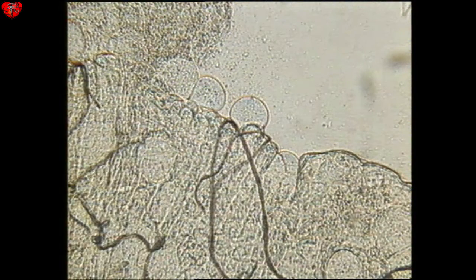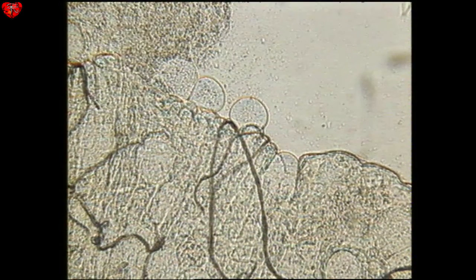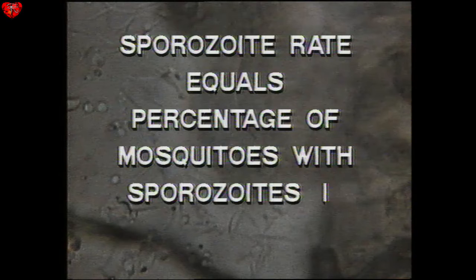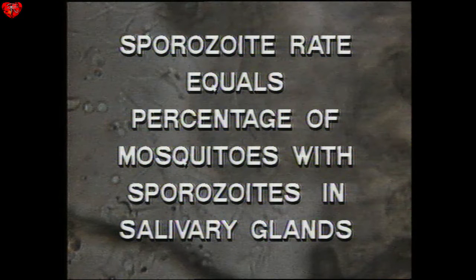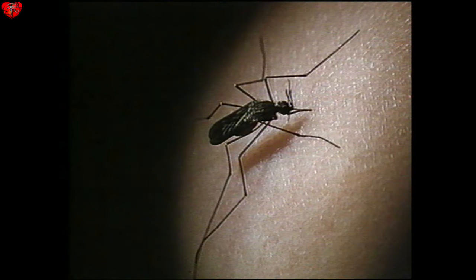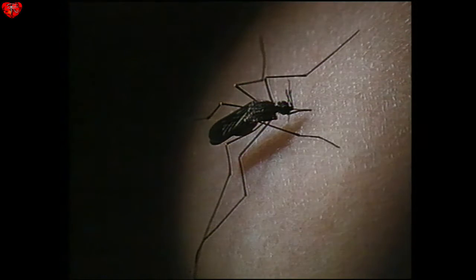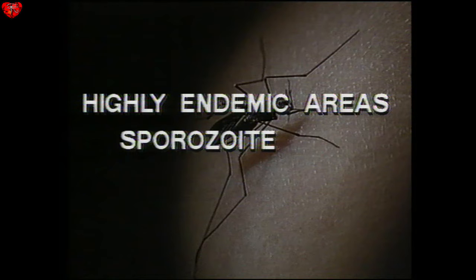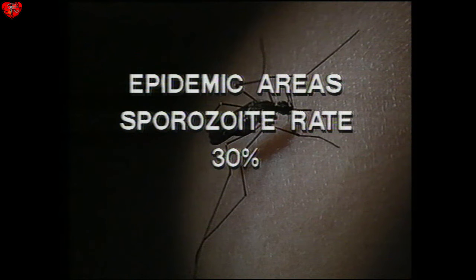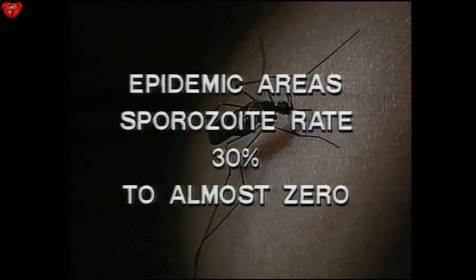The oocysts are well developed and easy to identify. If oocysts are found on the wall of the stomach, this only shows that the mosquito is susceptible to infection. To confirm that it is acting as a vector, sporozoites must be found. The sporozoite rate is the percentage of mosquitoes with sporozoites in their salivary glands. It's an important component of epidemiological studies. It shows which species are likely to transmit malaria and is essential for judging the effectiveness of control measures. In highly endemic areas the sporozoite rate may be up to 4%; in epidemic areas it may vary between 30% during a severe outbreak to almost zero when there's very little transmission.